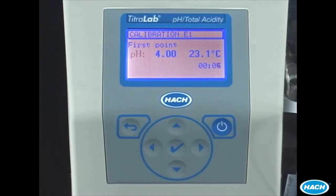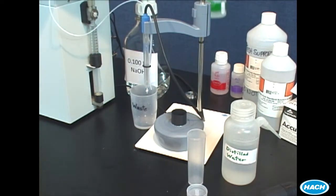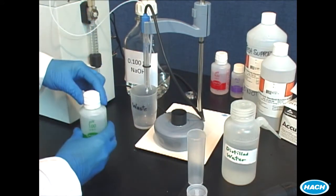Following successful acceptance of the first calibration, begin preparing the second buffer. Prepare the pH 7 buffer the same way you prepared the pH 4 buffer.